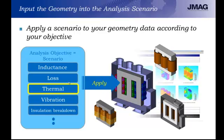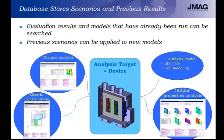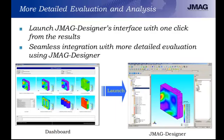You set the input geometry and define what you want to get from it. The database stores scenarios and previous results, so evaluation results and models already run can be searched and previous scenarios applied to new models. For a given analysis target such as a transformer, you can look at previous analyses like the thermal analysis or apply different analysis models. More detailed evaluation is possible by launching JMAG Designer's interface with a single click from the results dashboard, allowing seamless integration with more detailed evaluation.